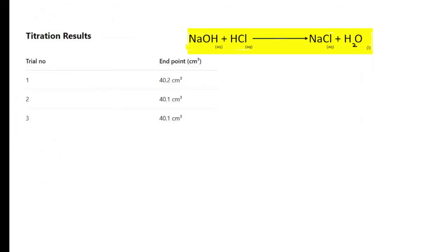Then you need to record the volume of hydrochloric acid used and repeat it say three times. So in the first time we got in this example 40.2 cubic centimeters, second one 40.1, third one 40.1.